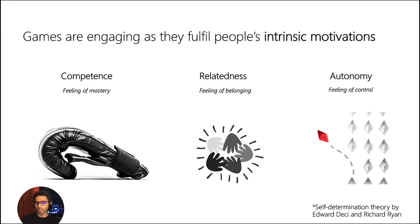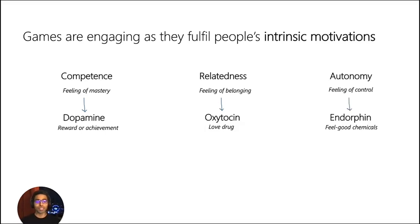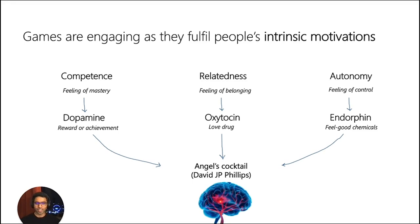These three needs are backed by science. Whenever we feel competence or complete something on our to-do list, we get a hit of dopamine. Feeling of belonging gives us oxytocin. And feeling in control releases endorphins — the feel-good hormones you also get while exercising. Our brain loves when it receives all three chemicals together. Together they are called Angel's Cocktail. David Phillips discussed this in a TED Talk about storytelling — interestingly, the same chemicals are released while listening to an engaging story.